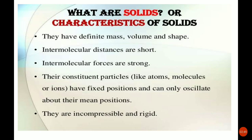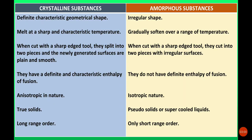Solids are incompressible and rigid. These are the characteristics of solids. These solids are classified into two categories: crystalline solids and amorphous solids.